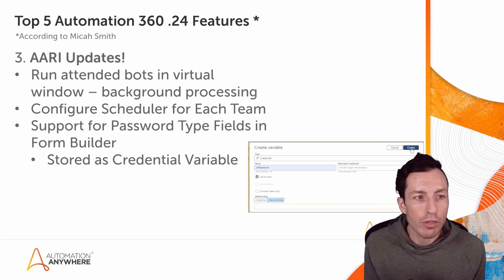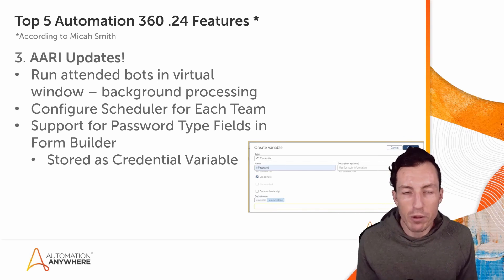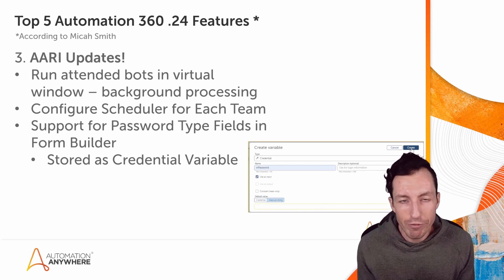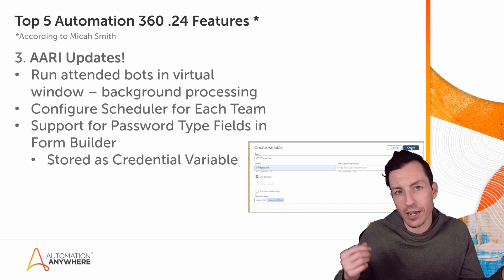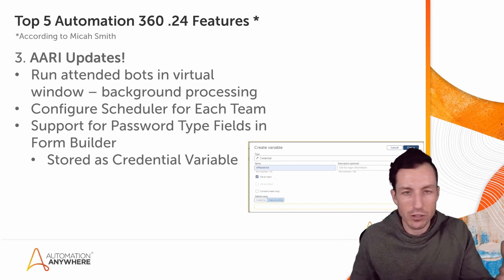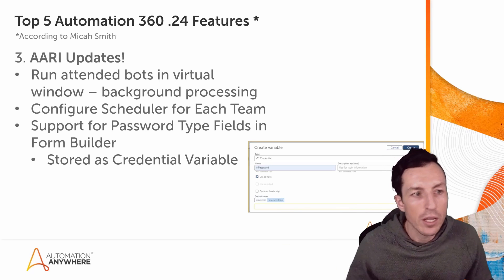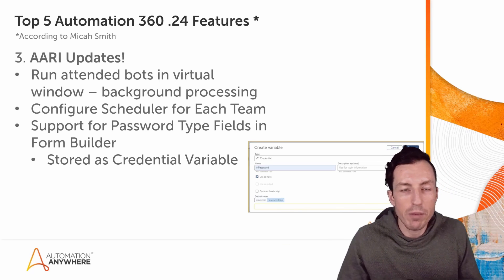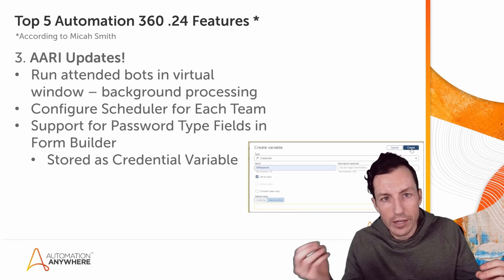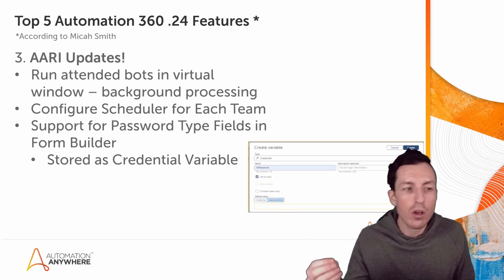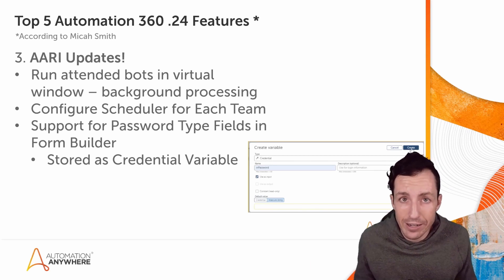Coming in at number three: AARI updates. AARI is Automation Anywhere's Robotic Interface — it enables human-in-the-loop processing. That could be a human starts a task and a bot finishes it, or a bot starts a task and a human does part of it, and then another bot continues. AARI can run in AARI Web, where a human uses a web interface and AARI runs on a pool of bot runners, or AARI can run on a local user's desktop as an attended automation use case.